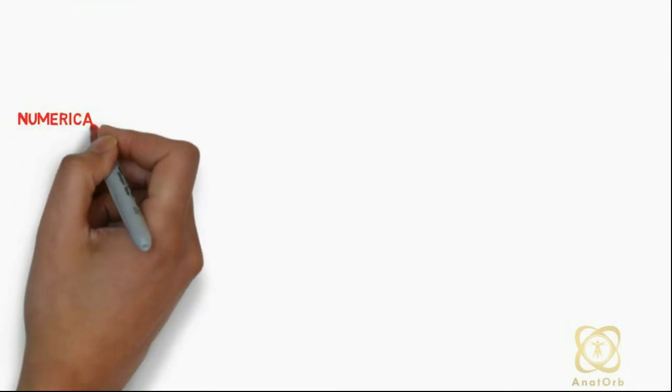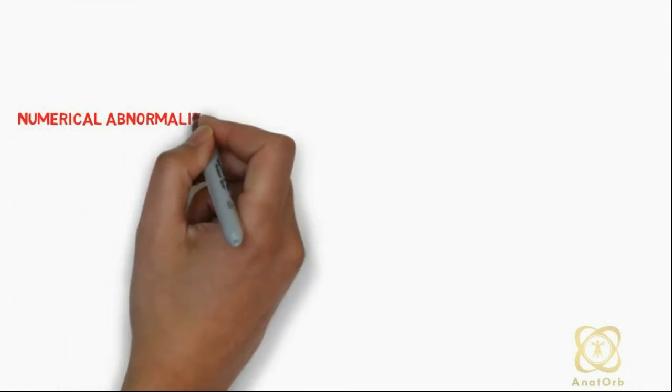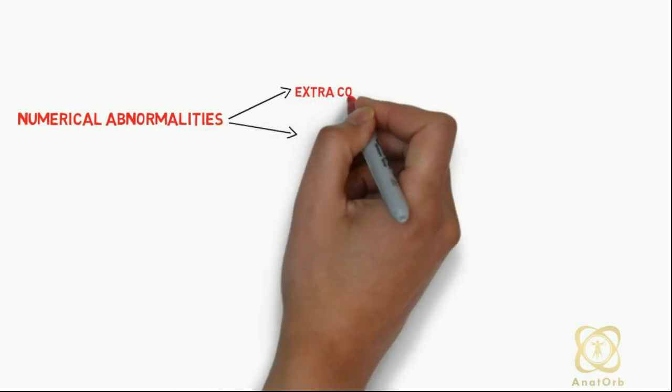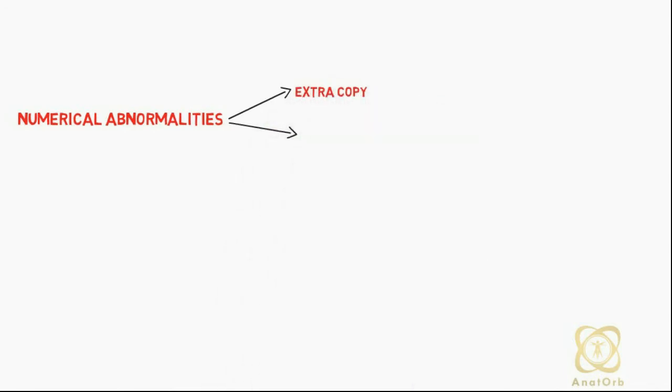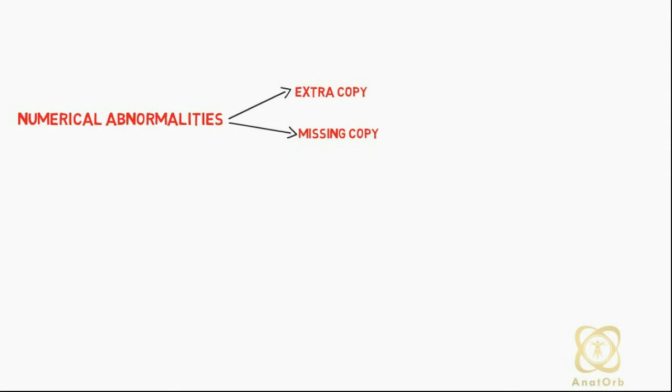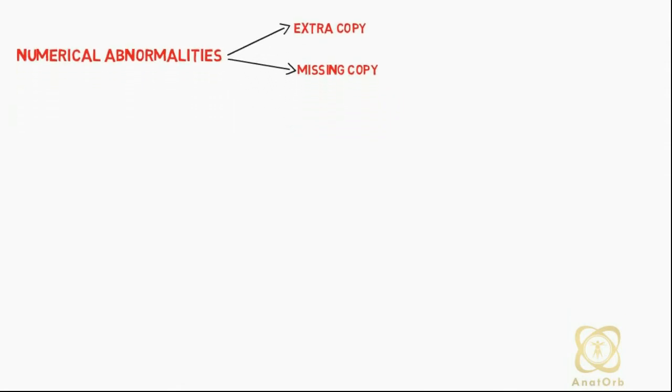Let's talk about numerical abnormalities. Numerical abnormalities occur as a result of the presence of an extra or missing copy of a chromosome.